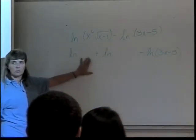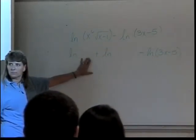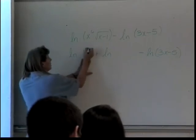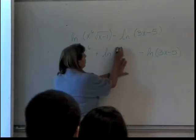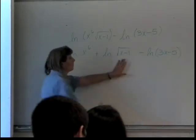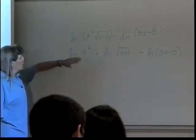What's going to go in this first spot? The natural log of what? X to the 6th. What goes in the second spot? Square root of X minus 1.